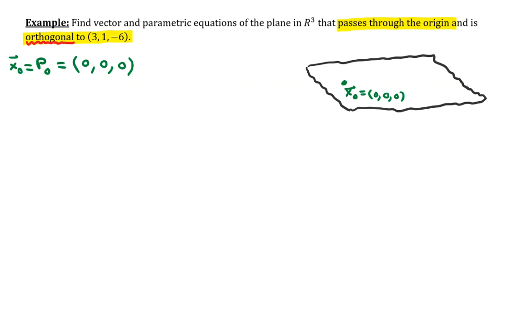What I'm going to do is draw a vector V having these components in such a way that it's perpendicular to this plane. Let's assume that's the vector V, which has components (3, 1, -6).